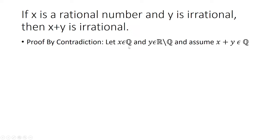So let x be a rational number and y is going to be an irrational number. This notation means it's a real number that is not rational, which means it makes it irrational. And we're going to assume that x plus y is going to be a rational number. So we want to come up with a contradiction, and that will conclude the proof.